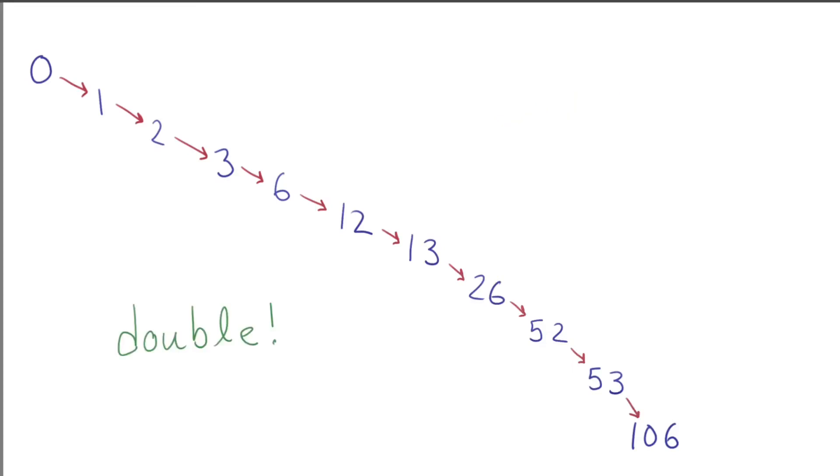How did I find this very efficient chain of operations? I used a trick. I just worked backward. Instead of trying to build up to 106, I try to unravel it instead. If I have 106, what was the operation I most likely did to get there? Well, it's even, so I probably just doubled. Doubling gets me farther faster than adding one, so I want to do as much of it as possible.